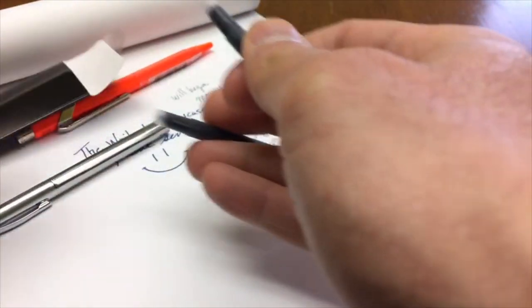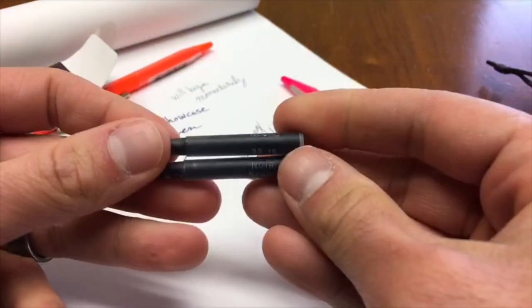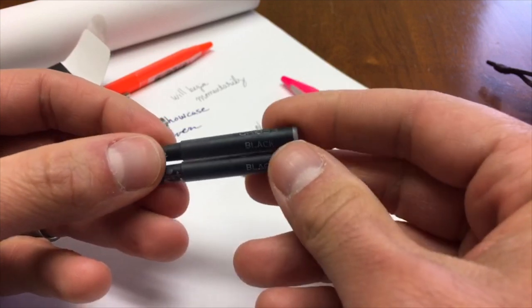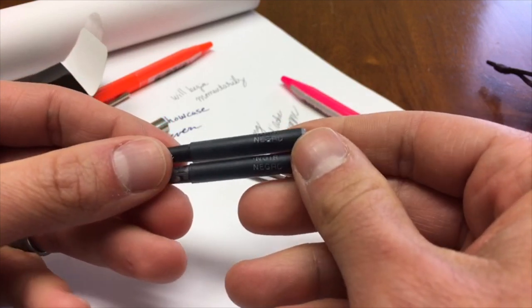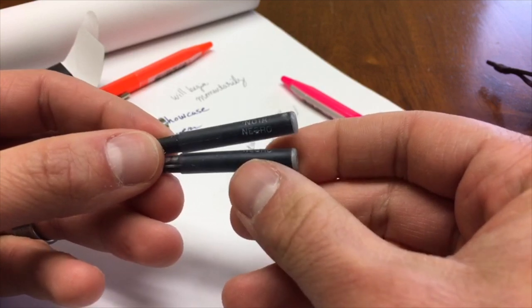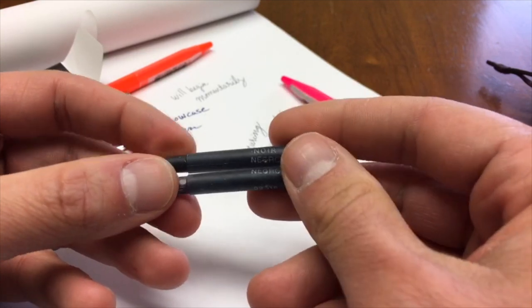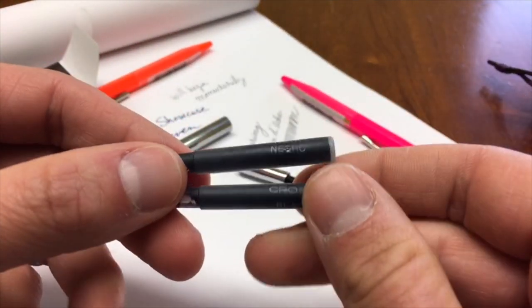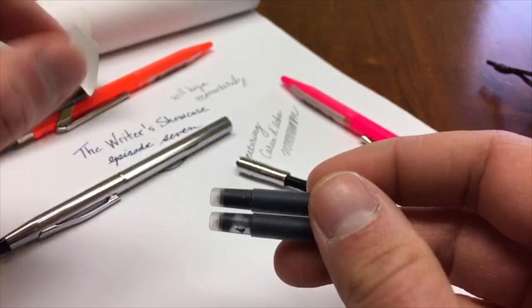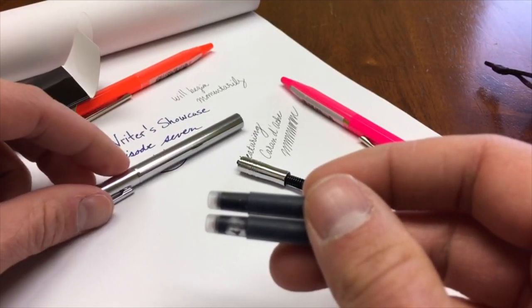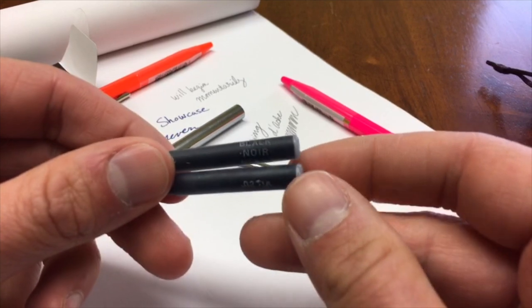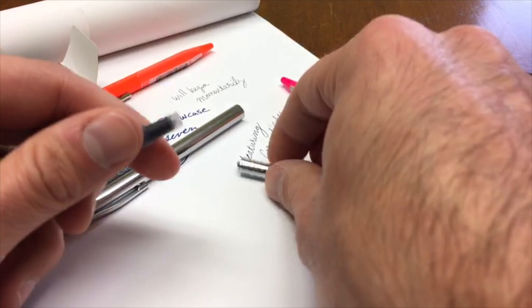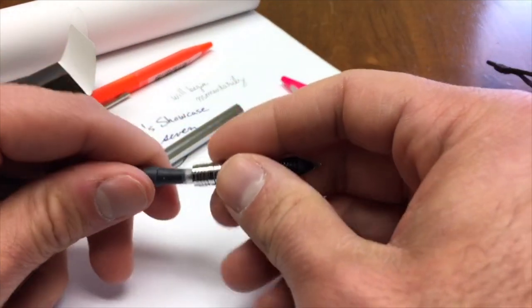The slim Cross cartridges are proprietary, and even more specifically for their slimline models like the Spire, which has been discontinued, and for this Classic Century model. They're updating in the next couple of months with a new line, that's why we have these on closeout. This is the black ink cartridge here, so you just plug this guy in.